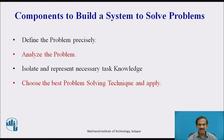What are the components to build a system to solve problems? We define a problem precisely, looking into all the micro level aspects of the problem. We analyze the problem, isolate and represent the necessary tasks and knowledge — not the total knowledge available to us. Then we choose the best problem-solving technique and apply it to get a solution.